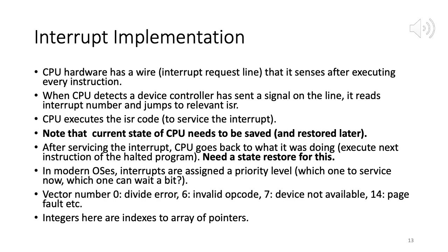In modern operating systems, interrupts are assigned a priority level — some interrupts may be more critical than others. If an interrupt is of utmost priority it gets the highest priority level — for example, if a virus or security threat is detected, those can be assigned the highest priority.